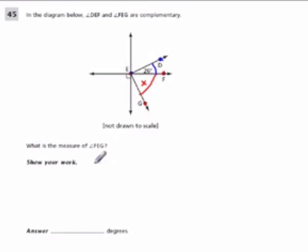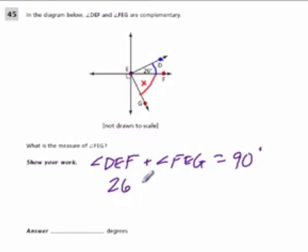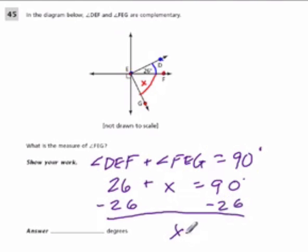Well, let's add this up. Angle DEF, I would write that. That's our first angle. Plus angle FEG. They're complementary, so we know they have to equal 90 degrees when I add them. And we know the value of DEF is 26 degrees. They gave us that. We don't know the value of FEG. But I know that if I add them up, I get 90. So I'm just going to subtract 26 degrees from both sides of this equation. And that will tell me the value of X. So X equals 64 degrees.